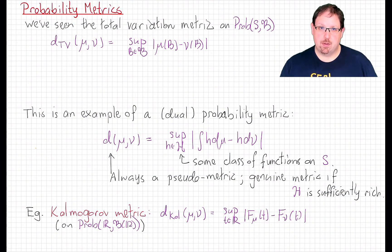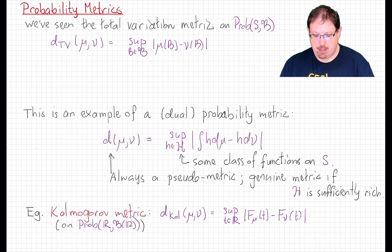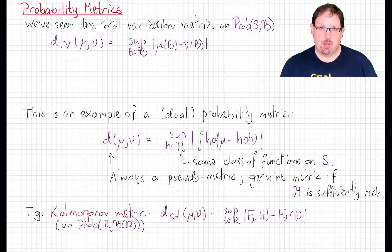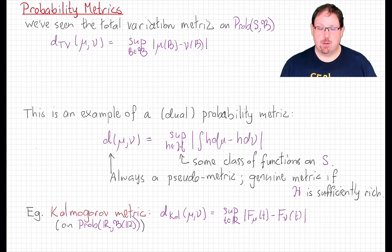One possibility would be to use the total variation metric. We take the supremum over all measurable sets of the difference between the measures involved. Unfortunately, this will not work in most interesting cases. As we saw, the total variation metric always assigns maximum distance 1 to any pair of probability measures that are mutually singular.